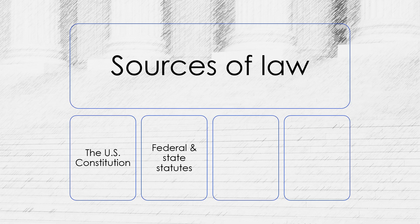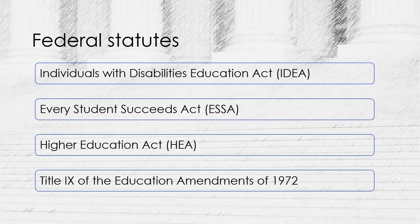Federal and state legislation, also known as statutory law, is the second important source of law in our legal system. The United States Congress enacts federal statutes, and these statutes apply in all 50 states. Here are some examples of federal statutes that have an impact on education in the United States.